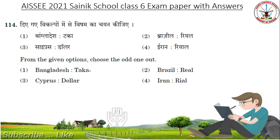From the given options, choose the odd one out. Bangladesh is to Taka, Brazil is to Real, Cyprus is to Dollar, Iran is to Real. Answer is Cyprus is to Dollar.